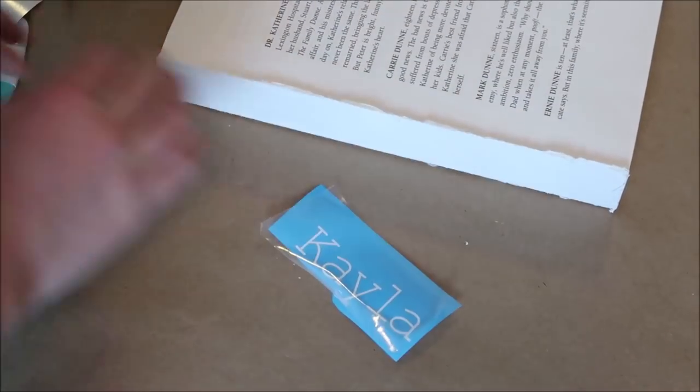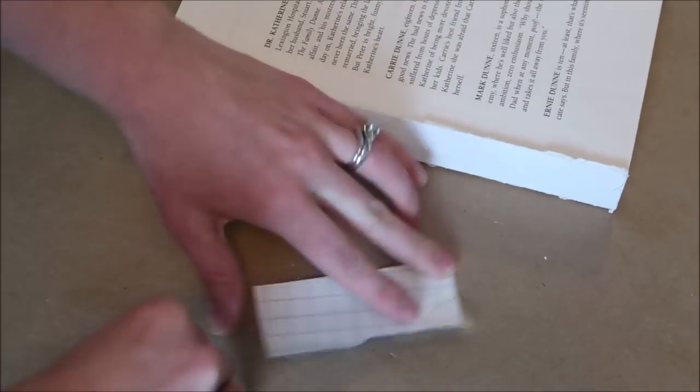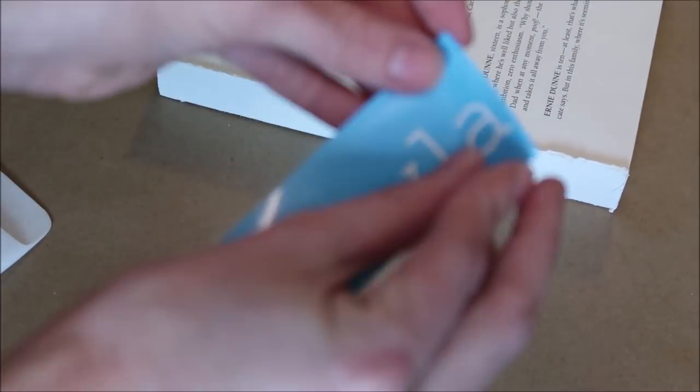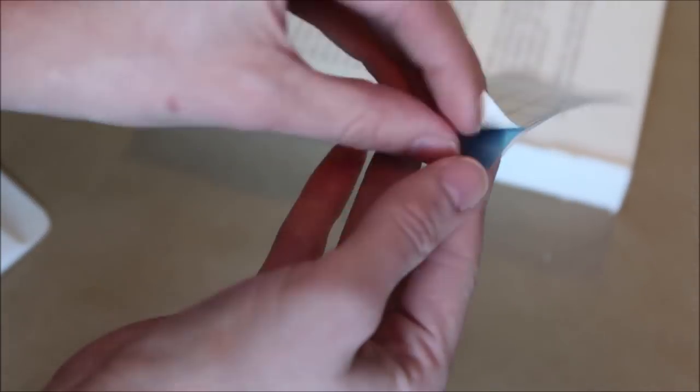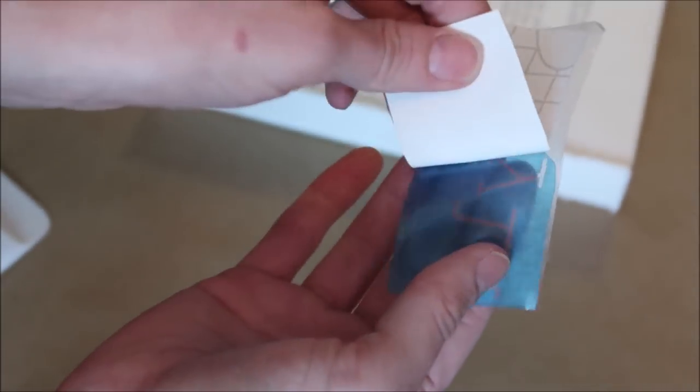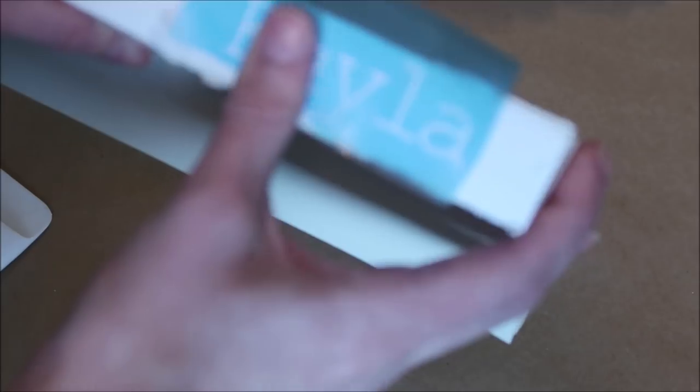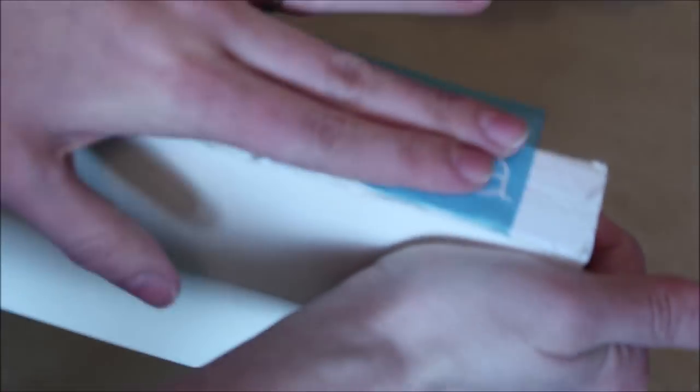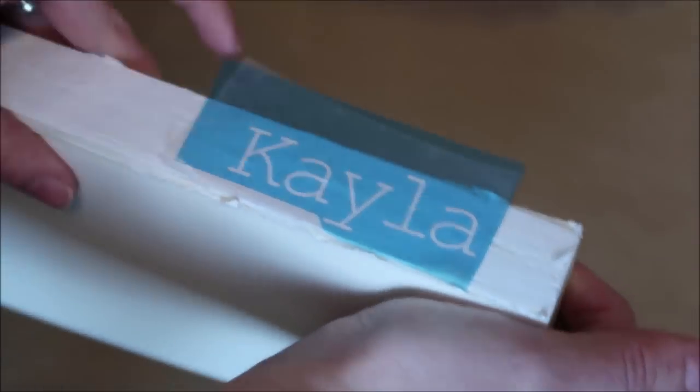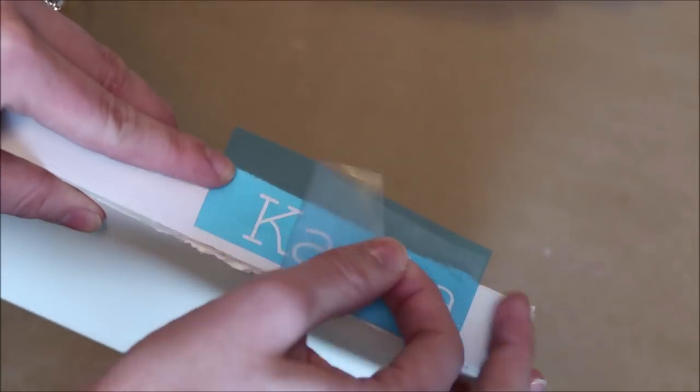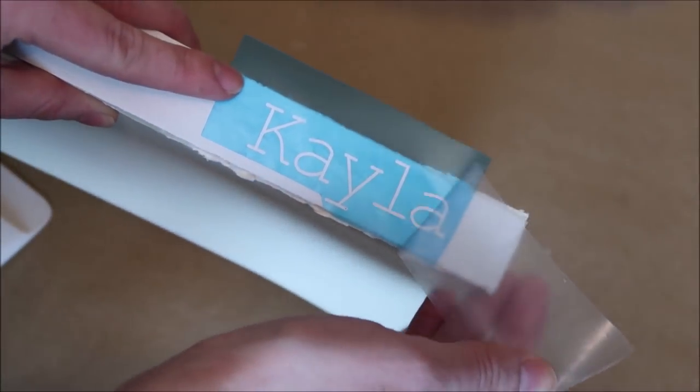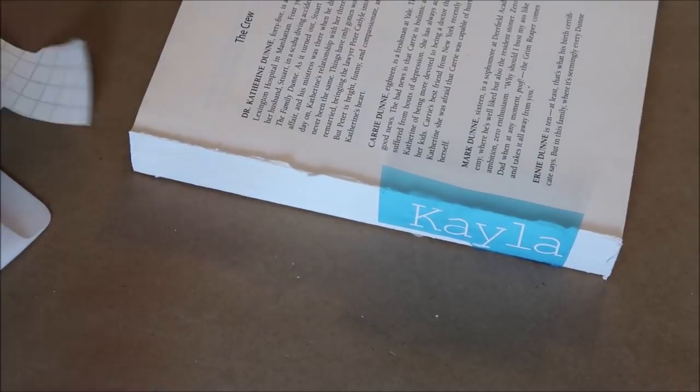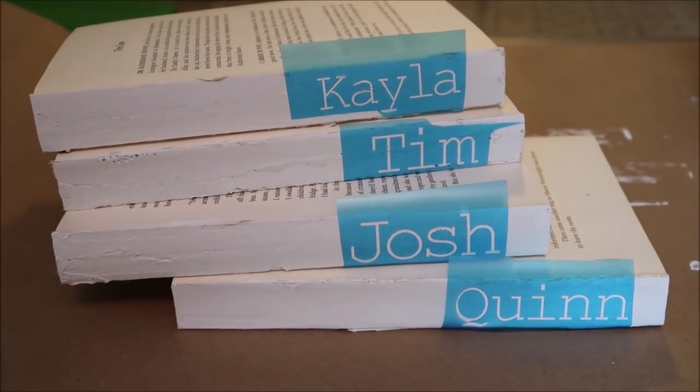Then I apply my transfer tape to the stencil. You want to scrape it down really good and then peel off the stencil material with your transfer tape. I place this on my book and then take off the transfer paper. Here's all of the stencils on the books.